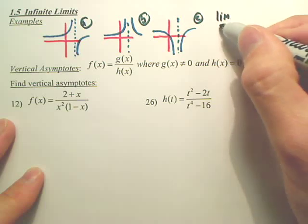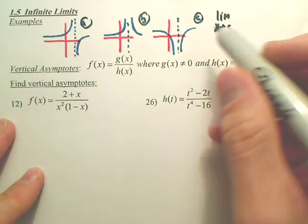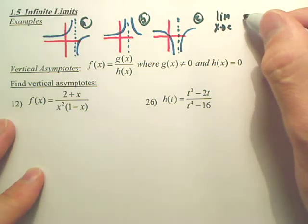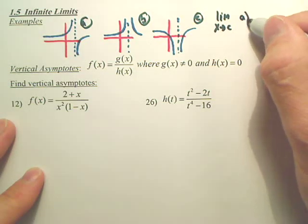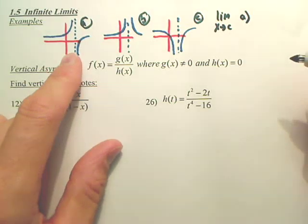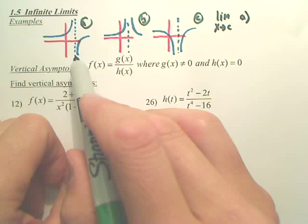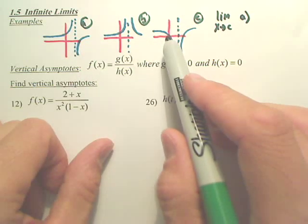If we're taking the limit as X approaches C, C being that dotted line, that vertical asymptote, for A, the answer, if we take the limit as X approaches this dotted line, does not exist. For all these, the limit does not exist.